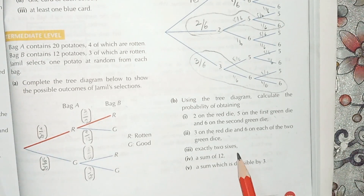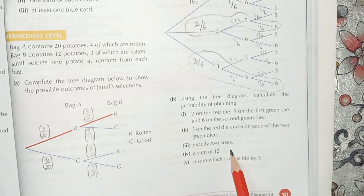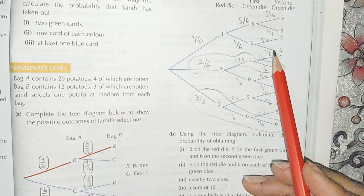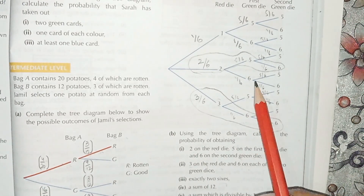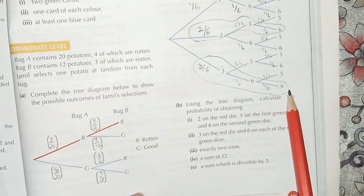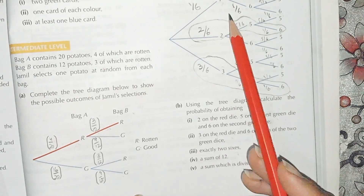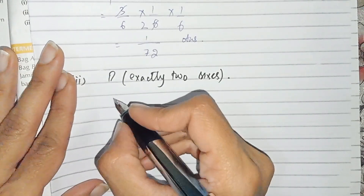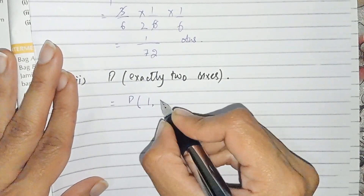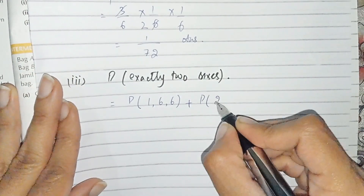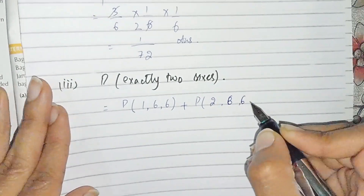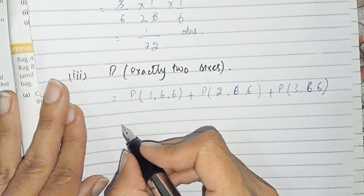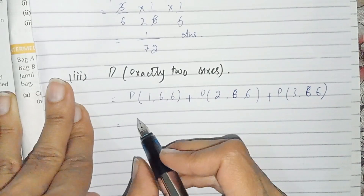For part 3, we need the probability of obtaining exactly two sixes. From the tree diagram, exactly two sixes can occur in three ways: outcomes (1,6,6), (2,6,6), and (3,6,6). We add the probabilities of these three branches. So we write P(1,6,6) plus P(2,6,6) plus P(3,6,6).